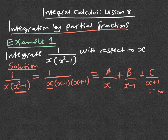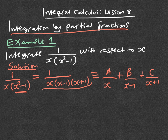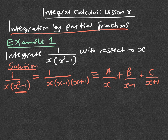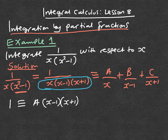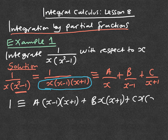The next thing we have to do is find the values of A, B, and C — that's what we were doing in lessons 6 and 7. The easiest way is to multiply through by the denominator. Doing so, we get: 1 is equivalent to A times x minus 1 times x plus 1, plus B times x times x plus 1, plus C times x times x minus 1.